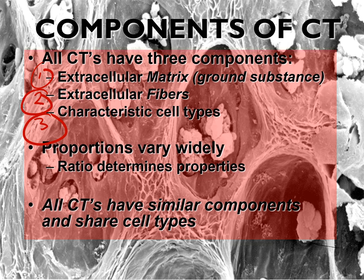The difference between the different types of connective tissue depends mostly and widely on the proportion and ratio of these components — the ground substance, the fibers, and the cells — as we are going to talk about later. However, all connective tissue have similar components and share the cell types.